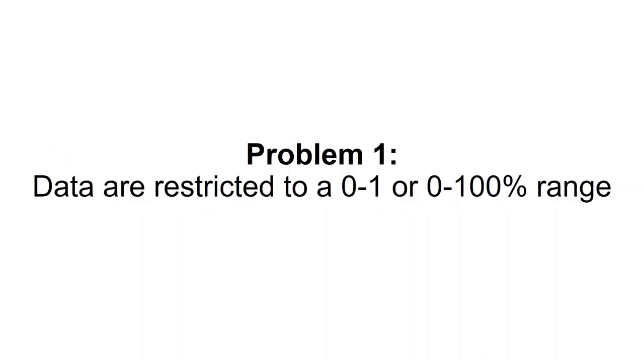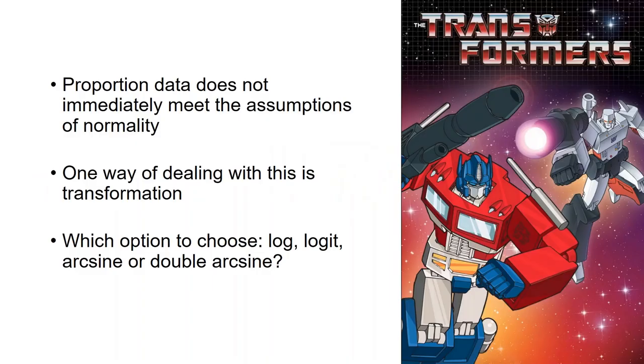So perhaps the most obvious problem with proportion data is that they are restricted to a 0 to 1 or 0 to 100% range, which means they don't meet the assumptions of normality. So given that proportion data do not immediately meet the assumptions of normality, if we're going to use parametric tests for meta-analysis, then we need to do something to the data in order to deal with this. And one common way of dealing with this is to transform the data to get it into a format which more closely approximates a normal distribution.